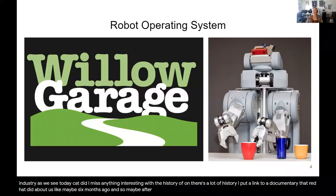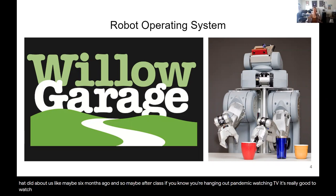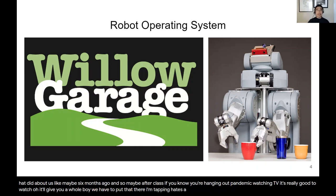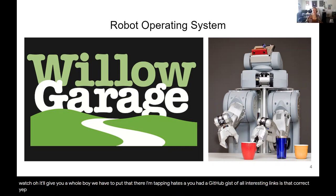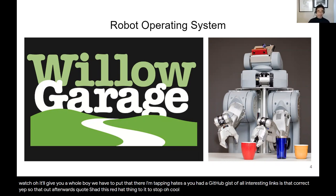Cat maintains a GitHub gist of all interesting links. That will be sent out afterwards. The Red Hat link should be added to it as well — it's already in there.